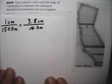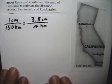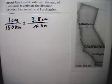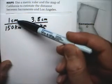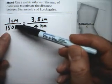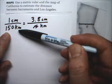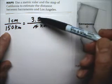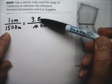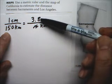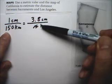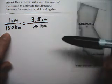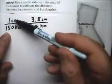Here's the proportion — one of the valid proportions: 1 centimeter compares to 150 kilometers as 3.8 centimeters compares to X kilometers.